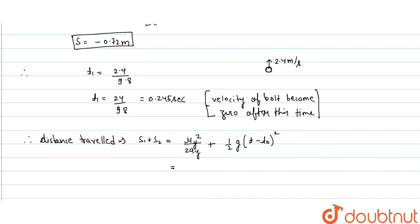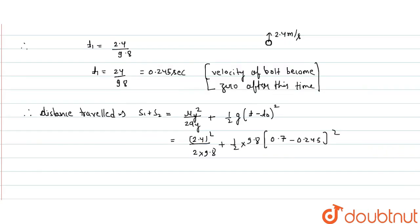Therefore the answer is velocity we know, 2.4 whole square upon 2 into 9.8 plus half g 9.8 times (0.7 minus 0.245) whole square equals 1.3 meter. Total distance is s1 plus s2.